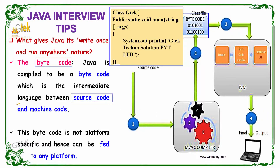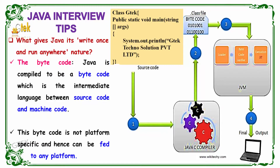This intermediate language can be directly run in any Java Virtual Machine, giving your final output. Hence, this bytecode is not platform specific. If a machine has a Java Virtual Machine, then it can definitely run the program and it can be fed into any platform. That is known as the write once and run anywhere nature of Java.